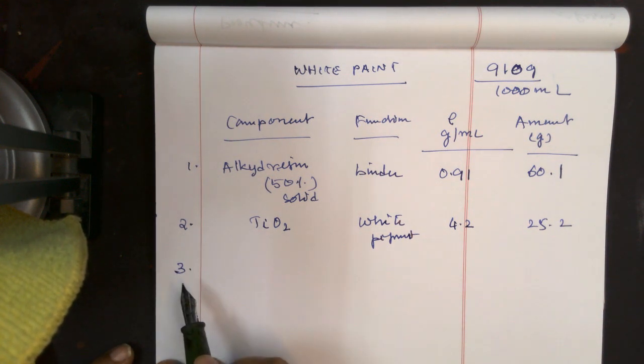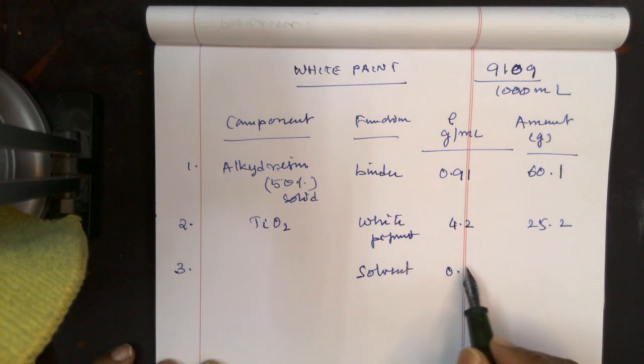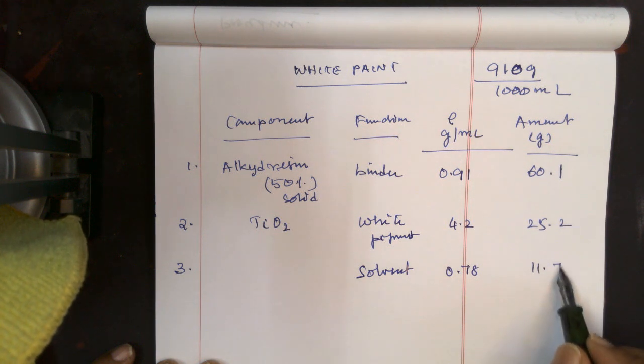And then we have other solvents. The solvent density is 0.78, and I have taken 11.7 gram.